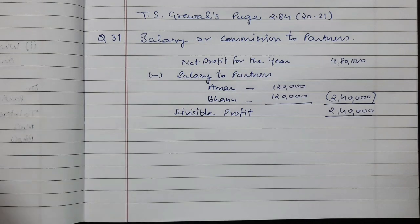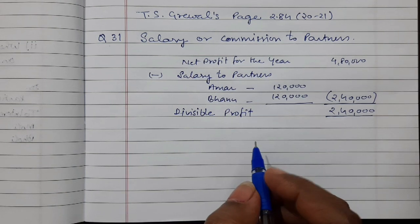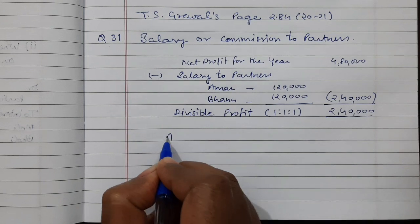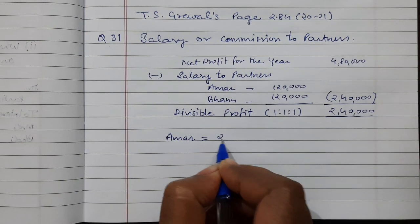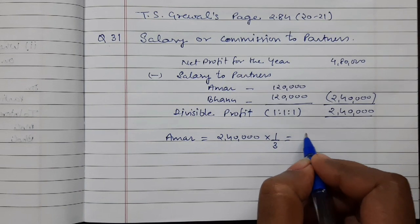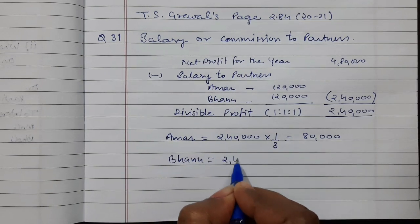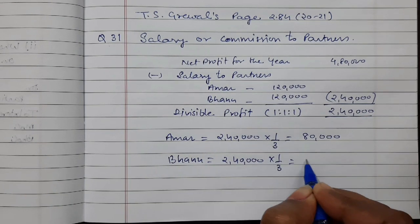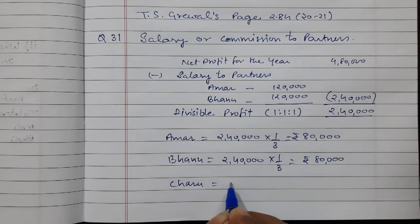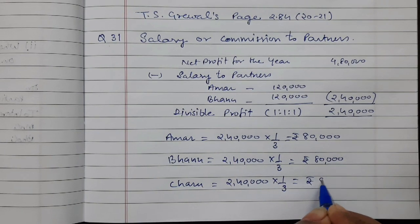This divisible profit will be divided among the partners in their profit sharing ratio. There is no profit sharing ratio suggested in the question, so they will all get equal shares. Amar will get 2,40,000 × 1/3, which is equal to Rs 80,000. Bhanu also gets Rs 80,000, and Charu will also get 2,40,000 × 1/3, equal to Rs 80,000.